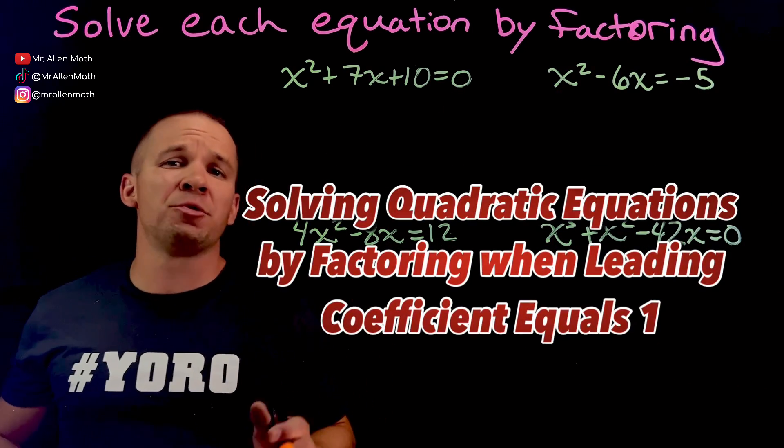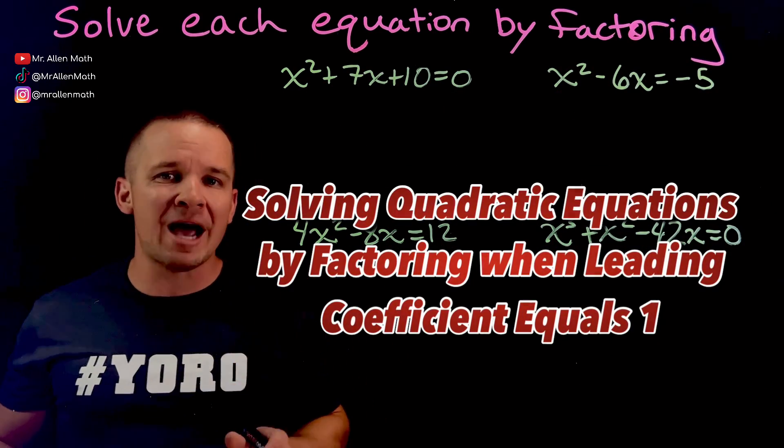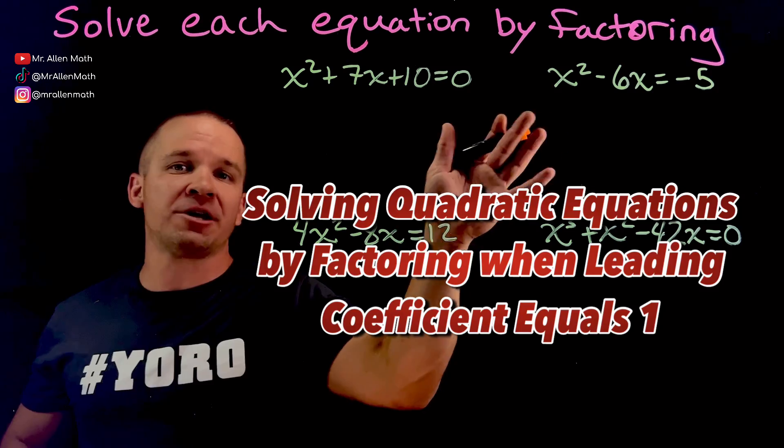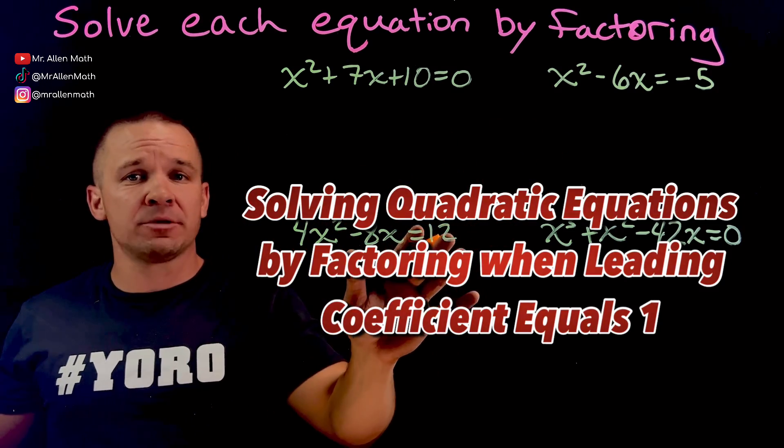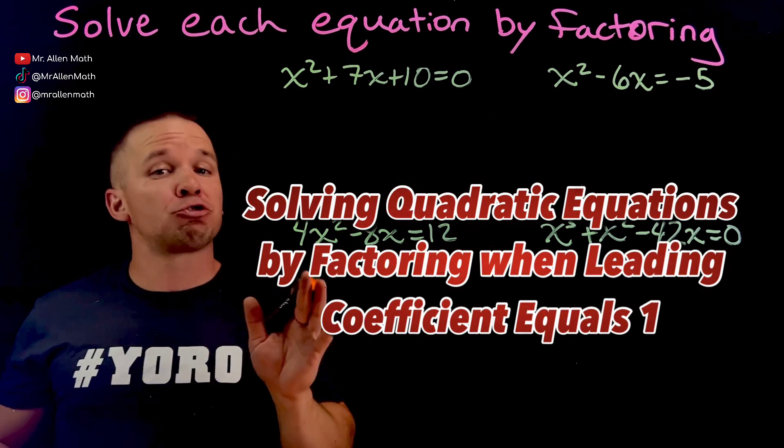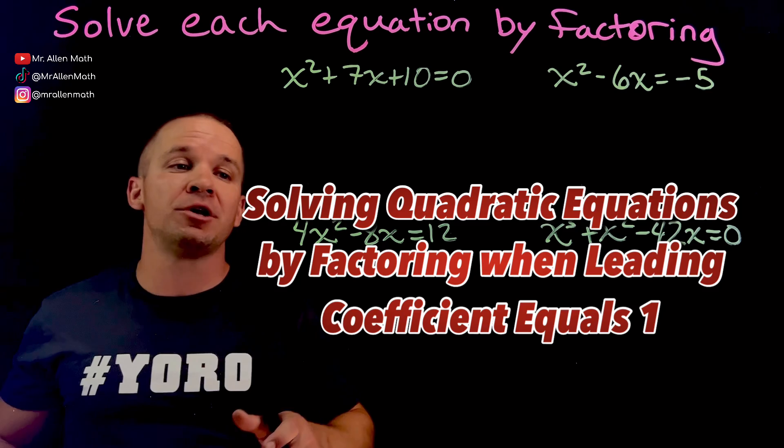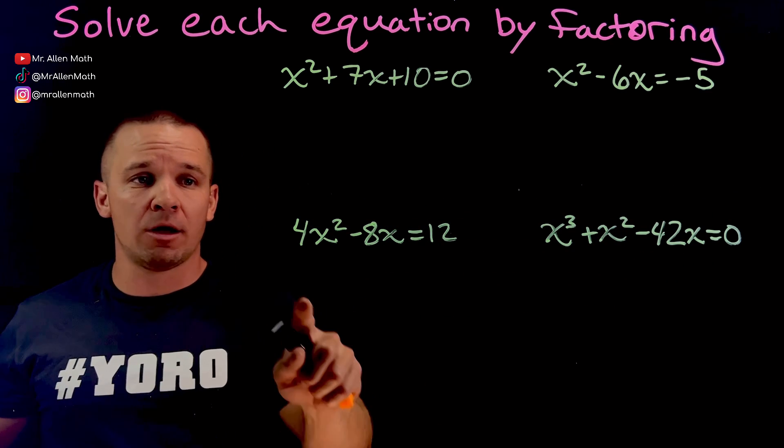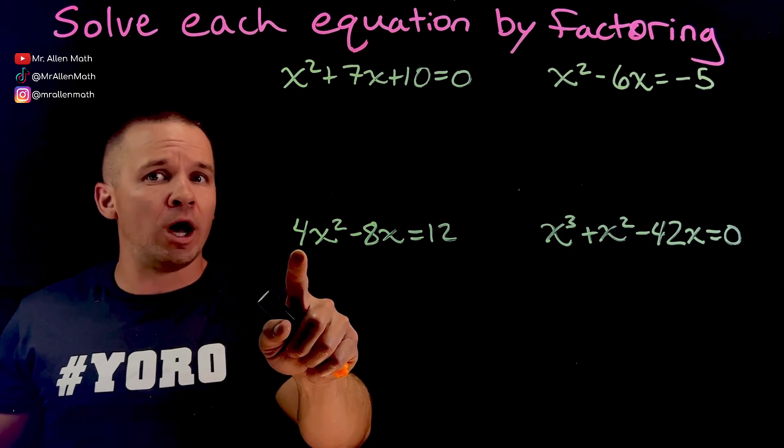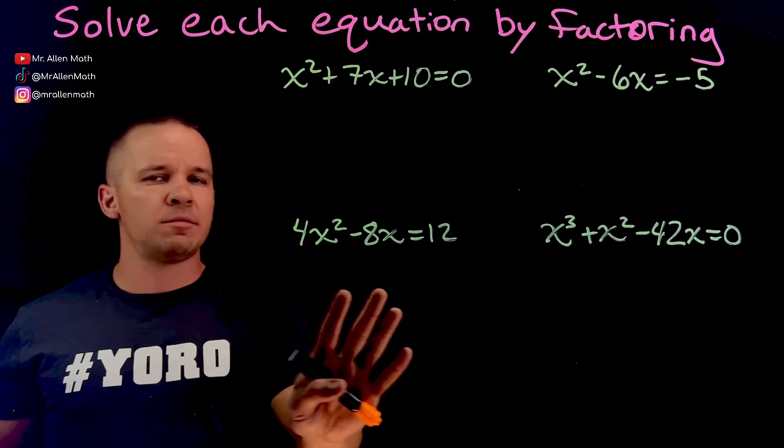What's happening, dogs? Mr. Allen here with a video on solving quadratic equations by factoring. For this video and these four examples, we're going to focus on factoring a trinomial with a lead coefficient of 1. And I know what you're saying, that guy's a 4 there, not a 1. What's up with that? We'll get there, we'll get there. Calm down, it's going to be okay.